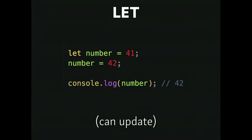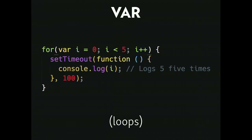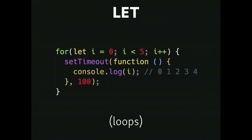With 'let', like var, you can update it — 'let number = 41', 'number = 42', you get 42. But you can't redefine it — if you try to redefine 'number', you get 'Identifier number has already been declared.' Let is really good for loops. With a var loop and a setTimeout, you'd get five fives in a row because the loop already ran before the setTimeout fires. But with 'let', you get 0, 1, 2, 3, 4 as expected. This is because const and let use block scope — these curly brackets define the scope.